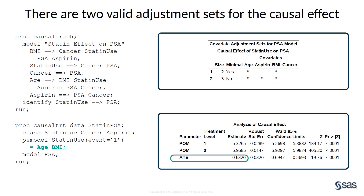In the PROC CAUSALTRT output, you will see that the estimated ATE of negative 0.6320 is consistent with the known true value of negative 0.608. Note that there is no a priori reason to choose the first adjustment set rather than the second adjustment set from the PROC CAUSALGRAPH output. For example, you can change the analysis to use the second adjustment set by simply replacing the variables in the PS MODEL statement in the CAUSALTRT procedure. As you can see, the second adjustment set also produces an estimate that is consistent with the known true ATE.